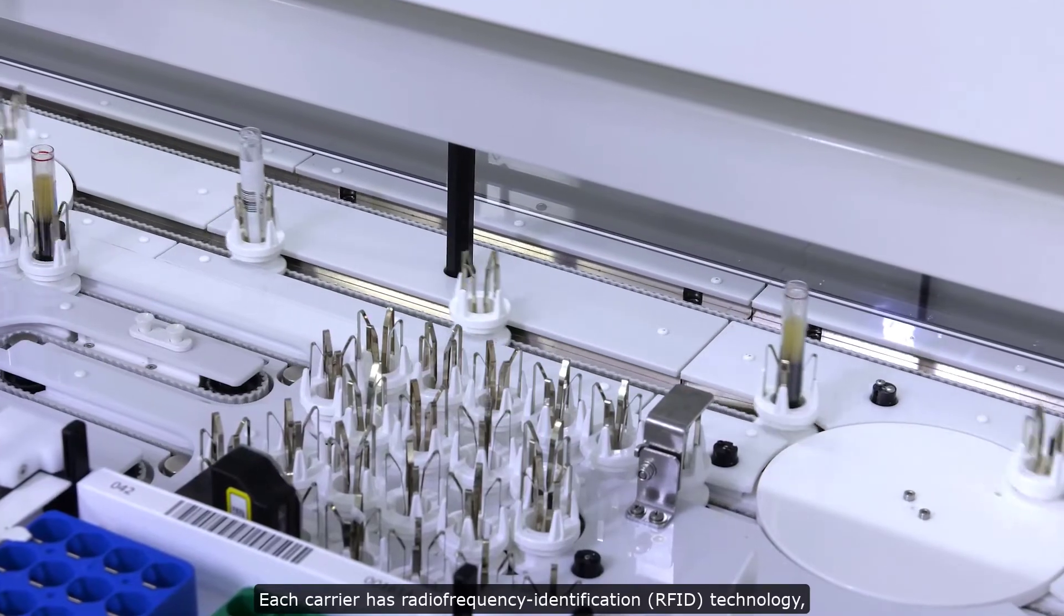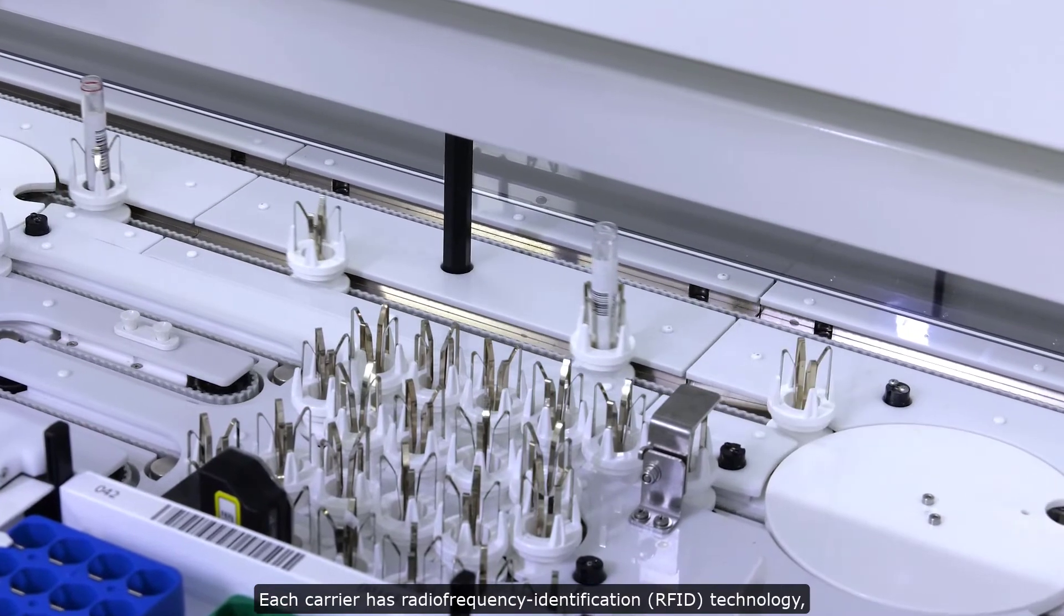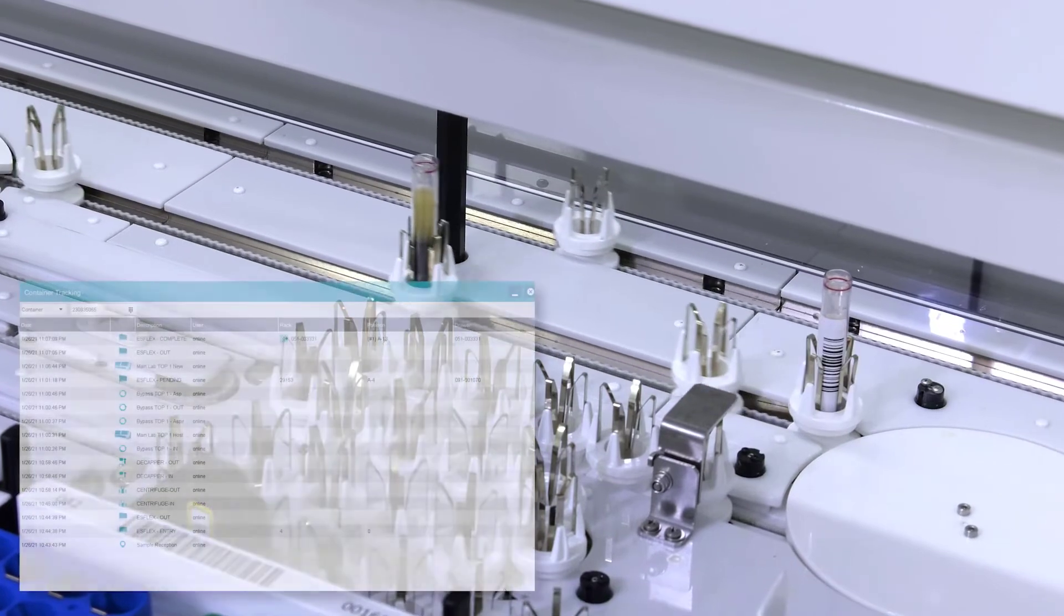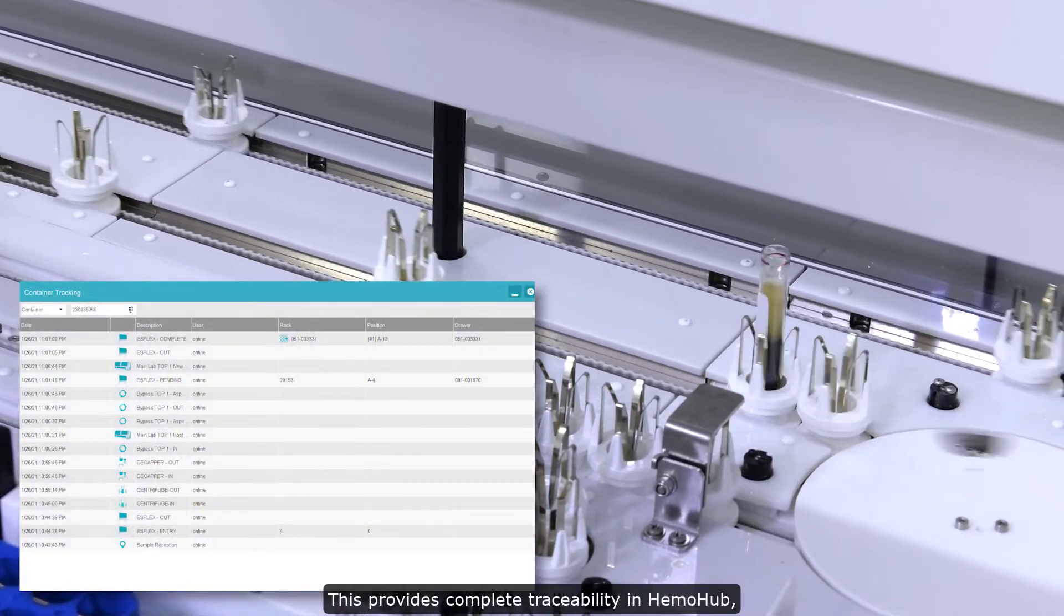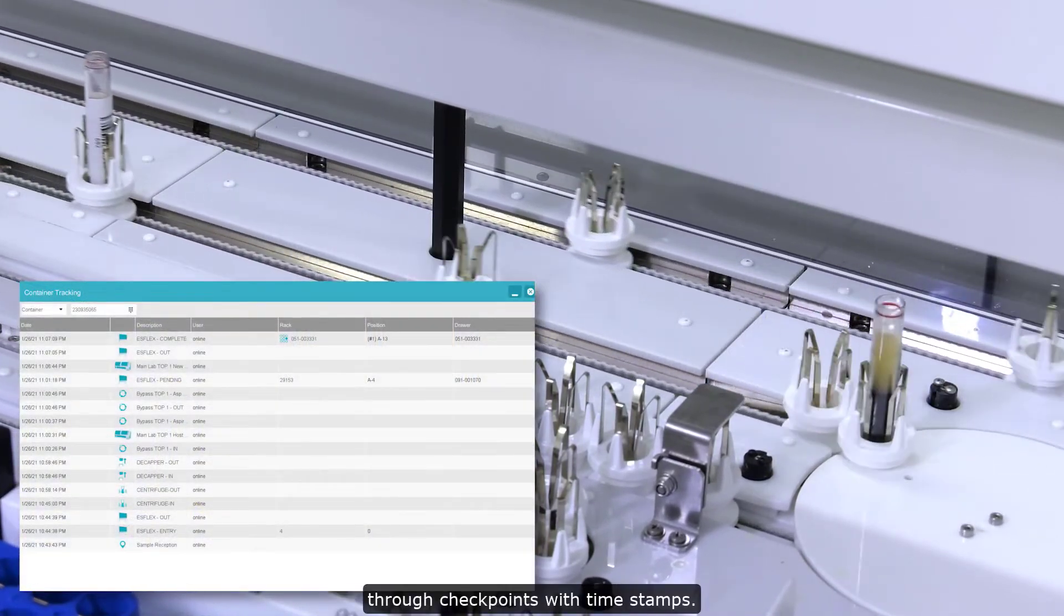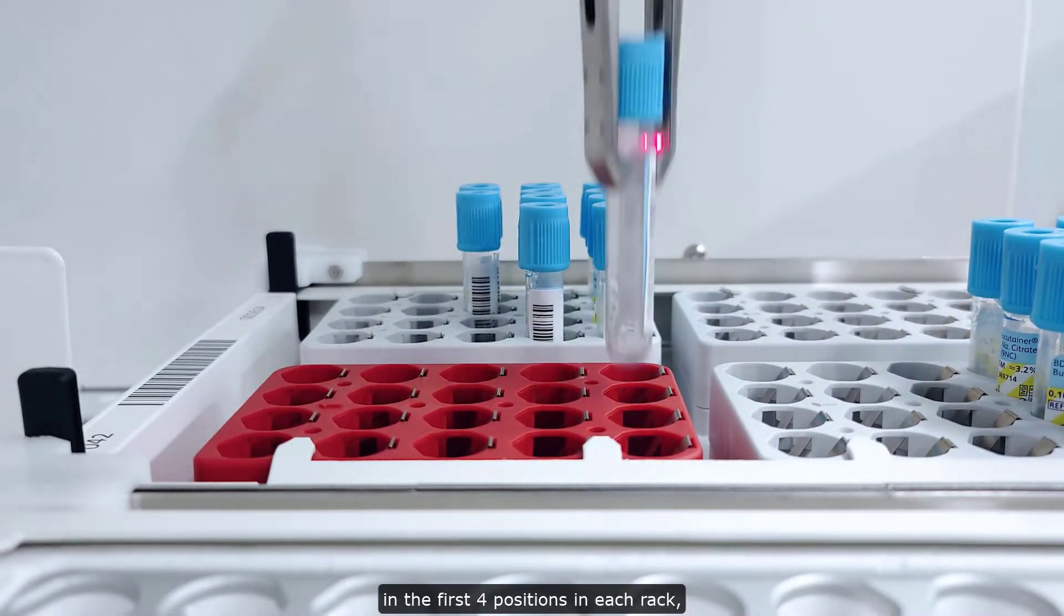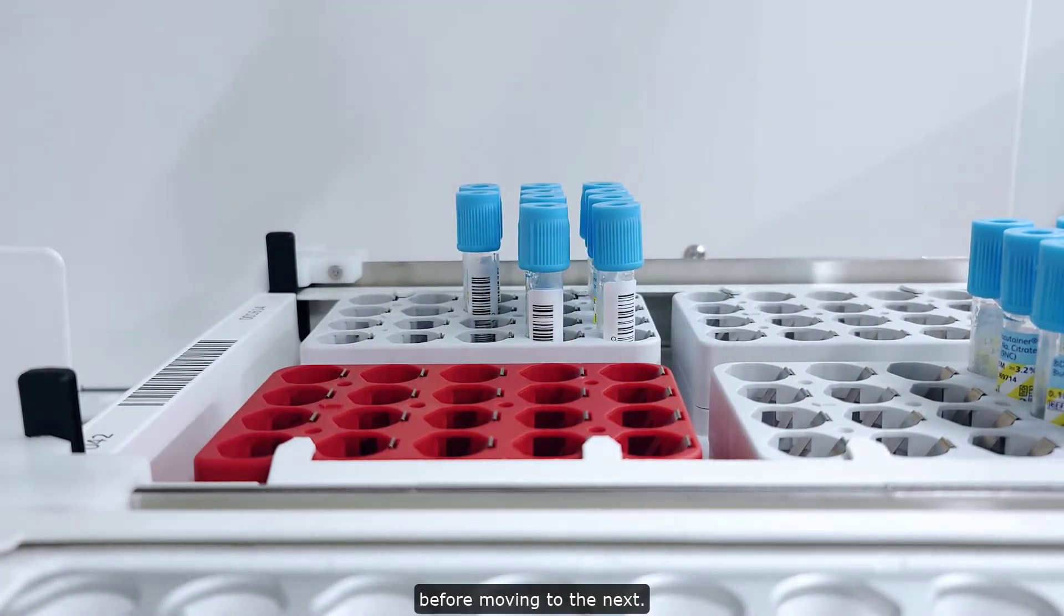Each carrier has radio frequency identification or RFID technology, optimizing sample flow and decreasing turnaround times. This provides complete traceability in HemoHub through checkpoints with timestamps. The system checks for samples in the first four positions in each rack before moving to the next.